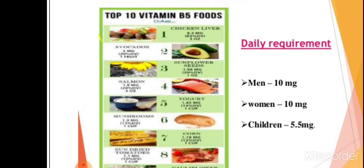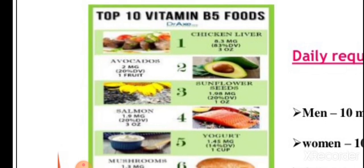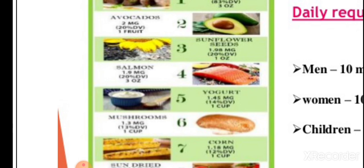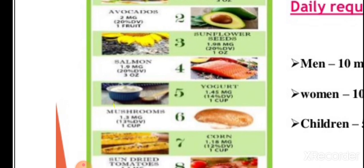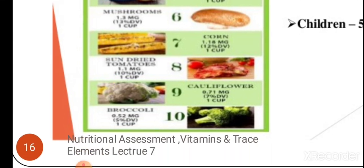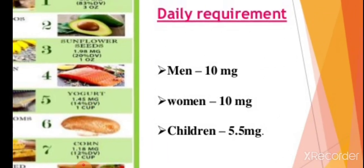Dietary sources of pantothenic acid include liver, avocado, salmon, mushrooms, yogurt, sunflower seeds, corn, tomato, cauliflower and broccoli. The daily required amount is 10 mg per day for men and women, and 5.5 mg for children.